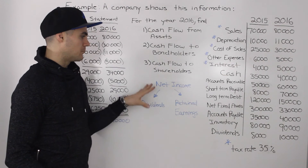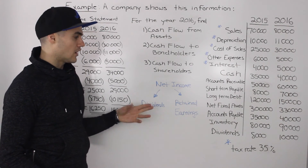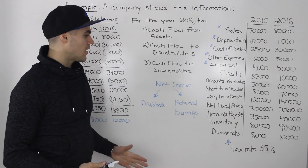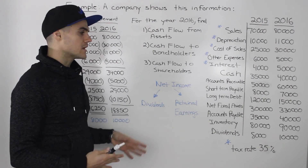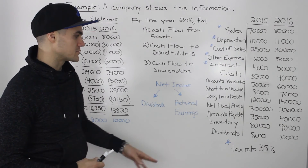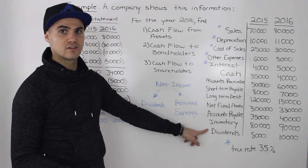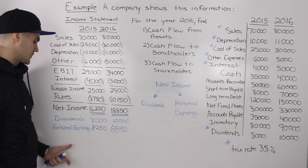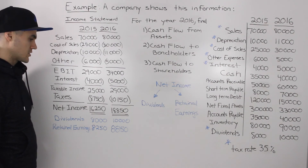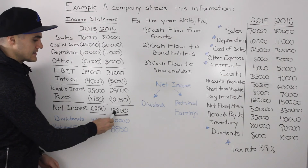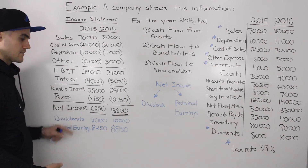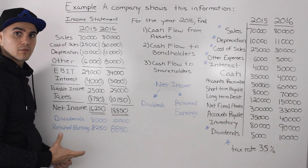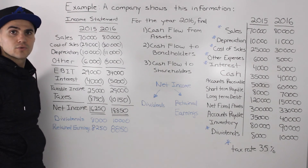A portion of net income gets paid out as dividends to shareholders, and the other portion gets retained in the company as retained earnings. Whenever you're doing a question like this, you always want to try to figure out what that proportion of net income is. In this case, it is possible because we're given the actual dividend figures for both 2015 and 2016. From that, we can easily calculate retained earnings by subtracting. In 2016, the company made $18,850 in net income; $10,000 was paid as dividends, and $8,850 was retained in the company.